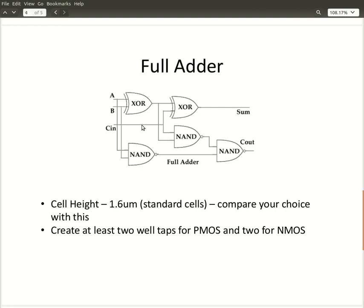Of course, to ensure that latch-up never happens, we have to put as many well contacts or substrate contacts as we can. So for your full adder, it is expected that you put at least 2 well contacts for PMOS and 2 well contacts for NMOS.